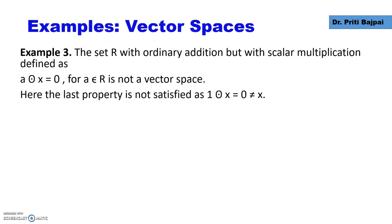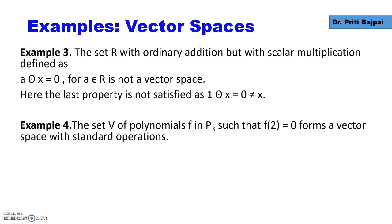Let's take another example. If we take R to be a set of real numbers with ordinary addition, but the scalar multiplication is defined as when we multiply the point x by a, we should get 0, where a belongs to R, that is, a is a real number.